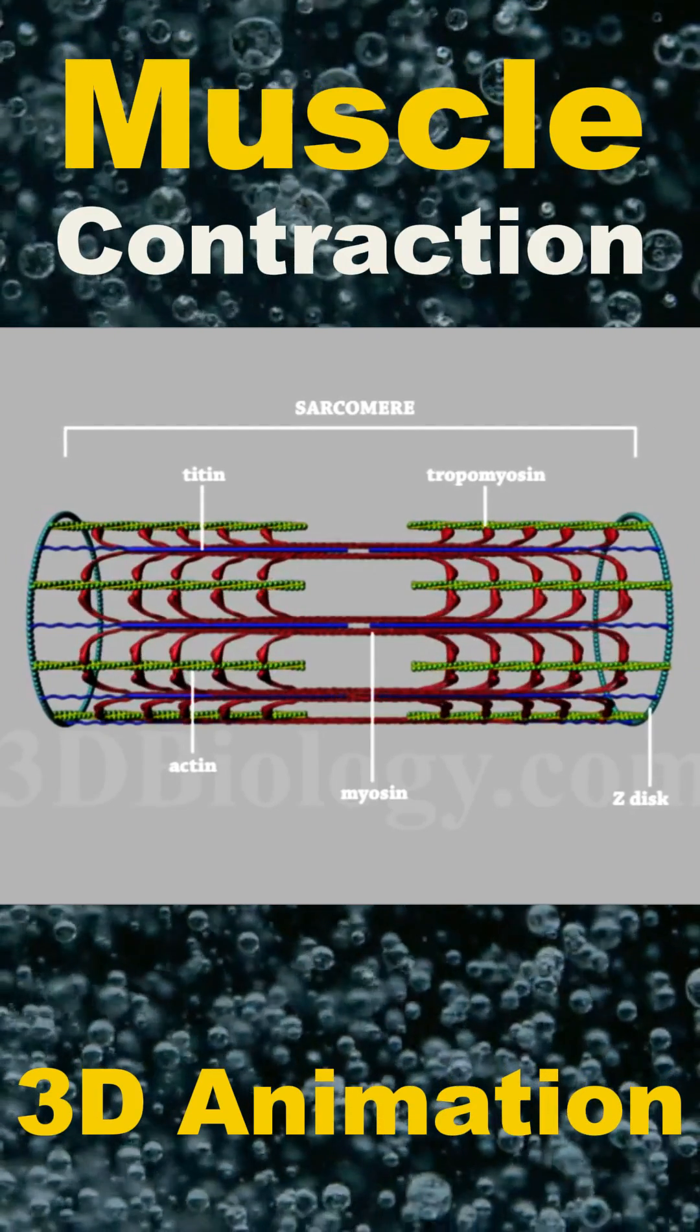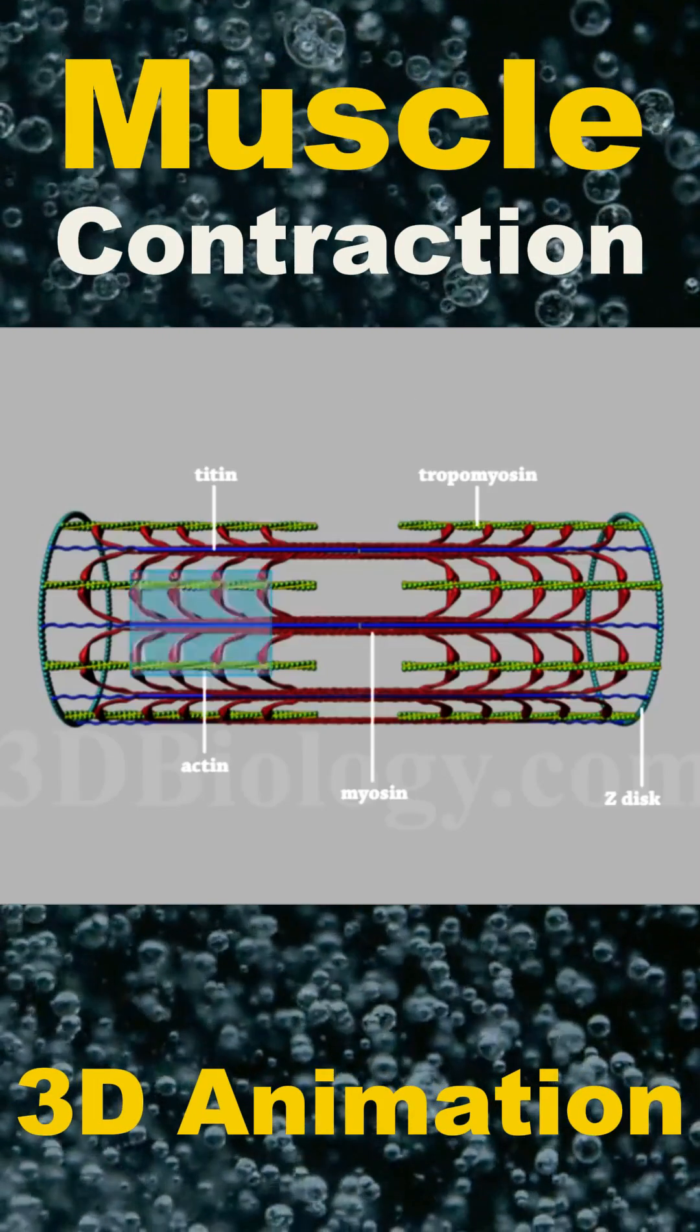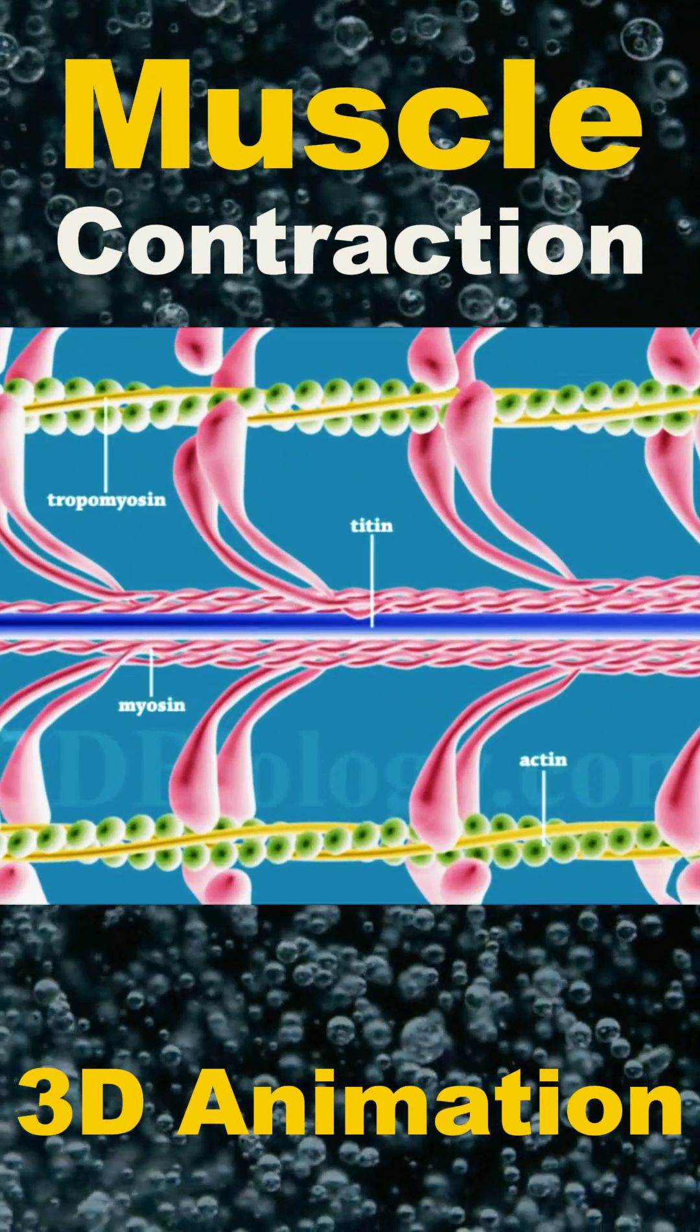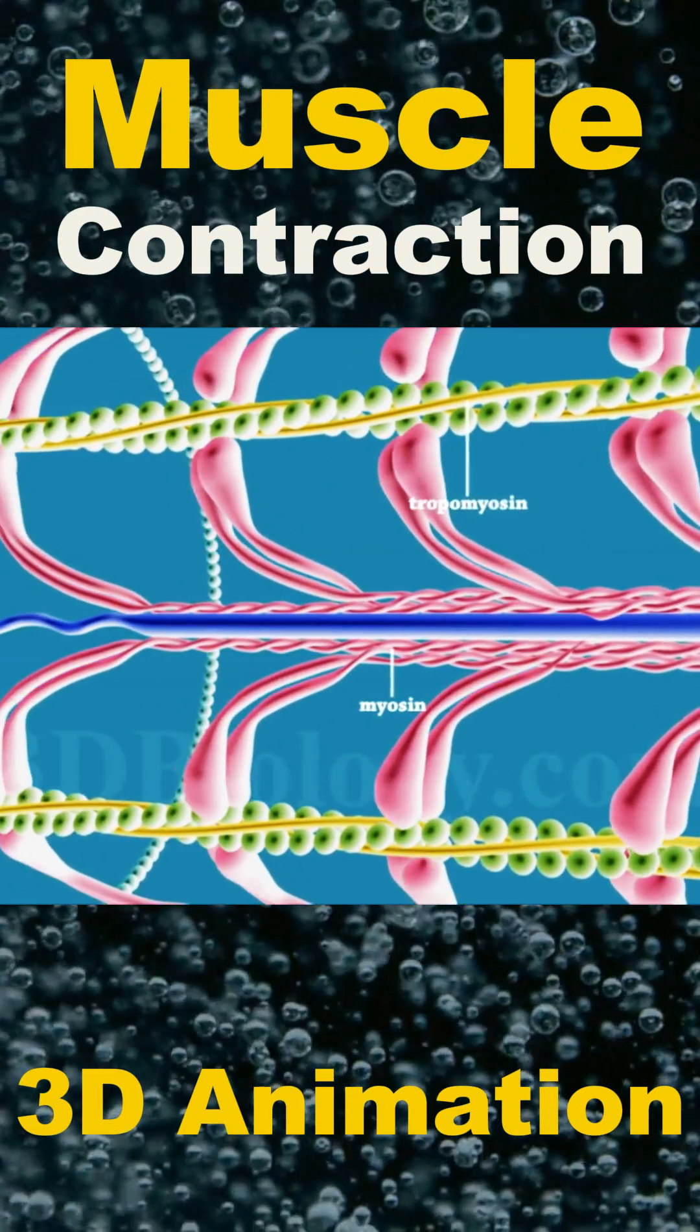During muscle contraction, actin filaments slide past myosin filaments without changing their lengths, yet the sarcomere contracts. The force driving this movement originates from myosin heads forming cross-bridge attachments to actin.